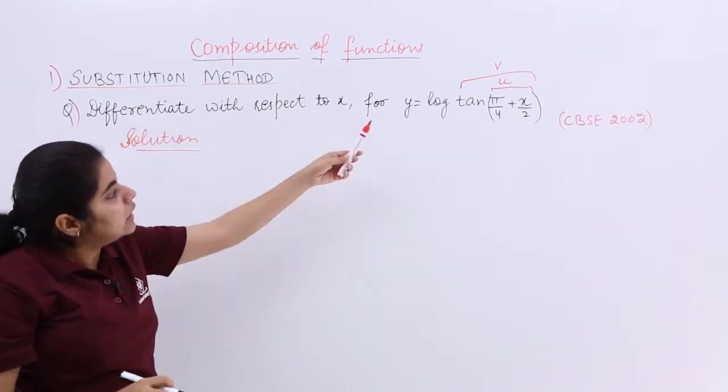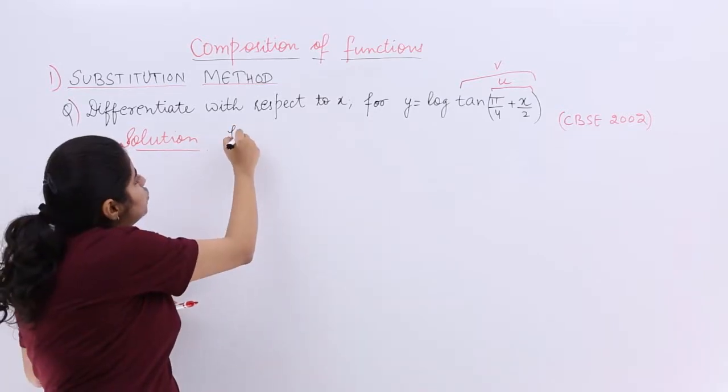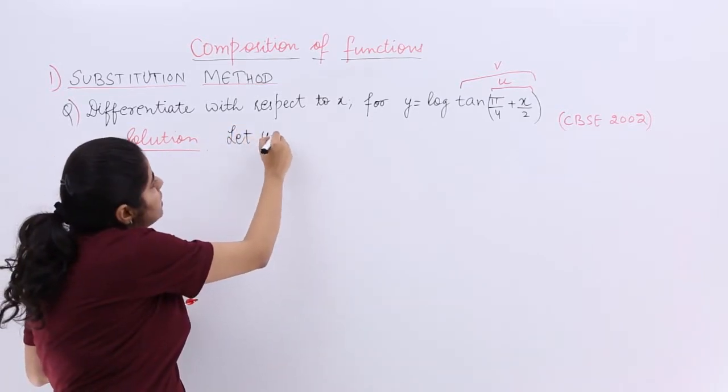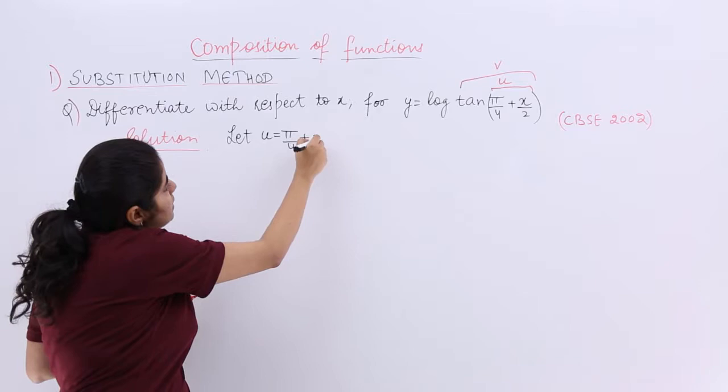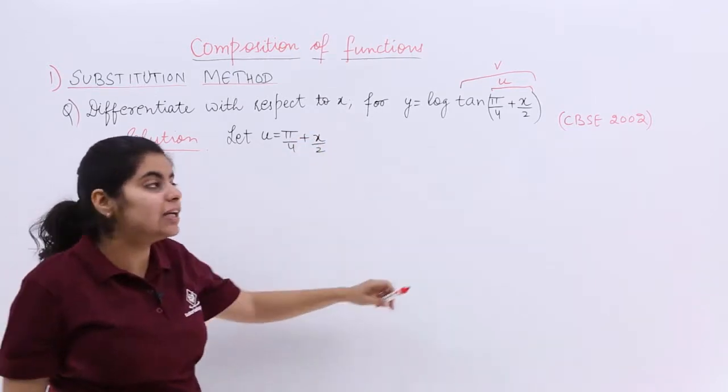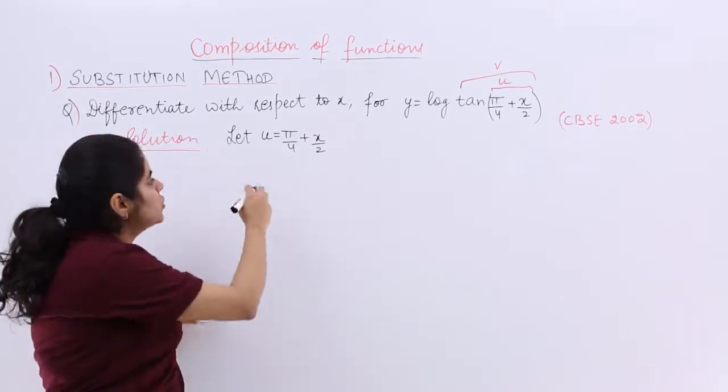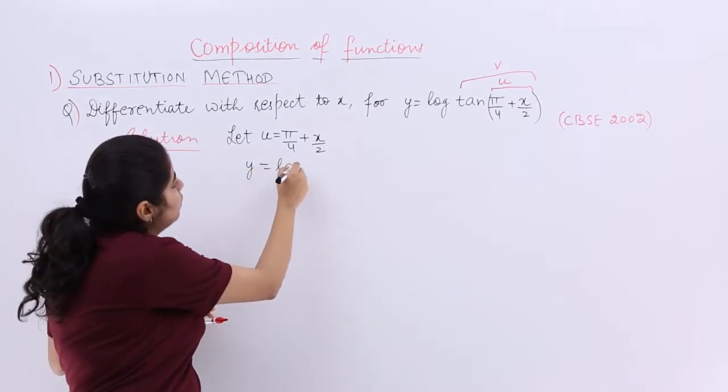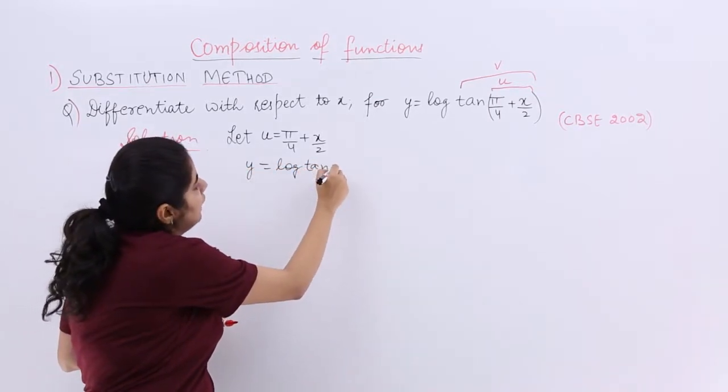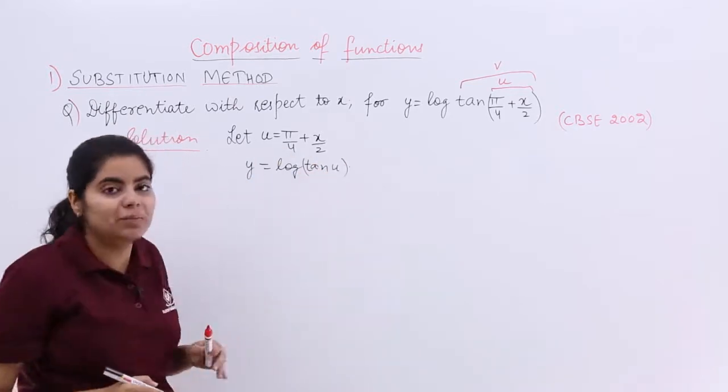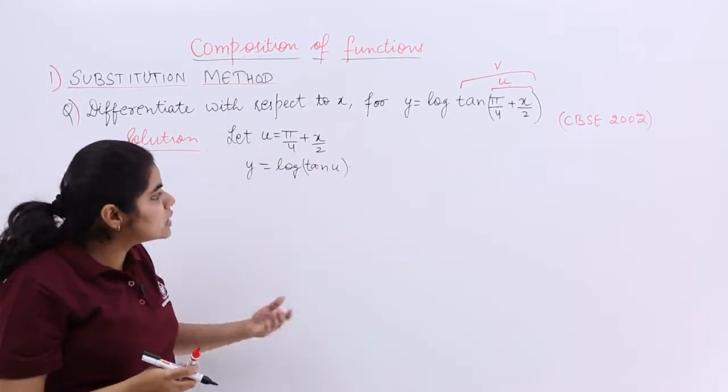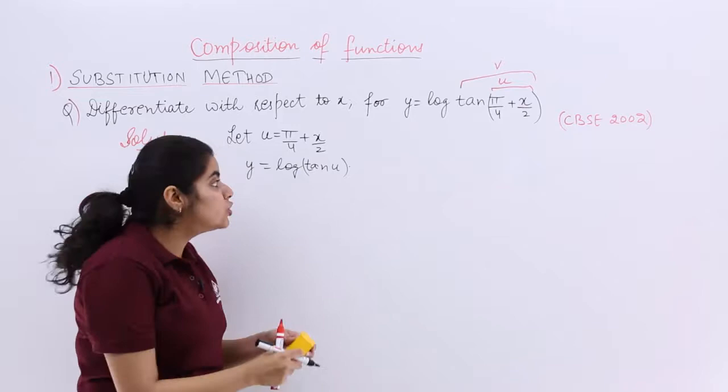My question is let I start the solution as u equals pi by 4 plus x by 2. I started with the substitution of the whole complete bracket. So my question changed to y equals log tan u. My question became this. But then I saw that even this can be changed.